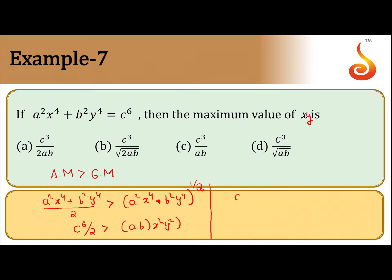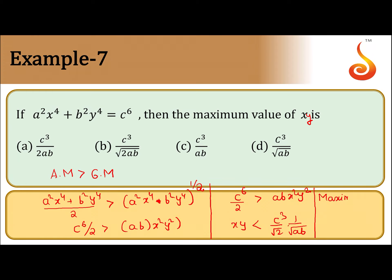So this can be written as c⁶ / 2 is greater than ab · x²y², or equivalently xy is less than c³ / (√2 · √(ab)). Therefore, the maximum value of xy is c³ / √(2ab). Without calculus we can find the maximum of the combination of two variables xy.